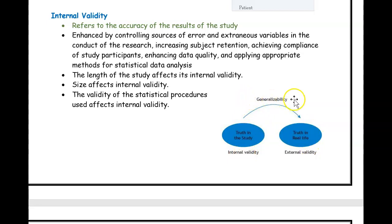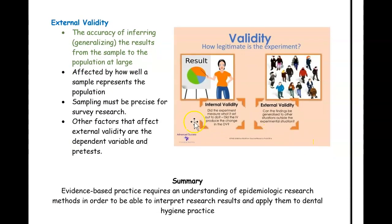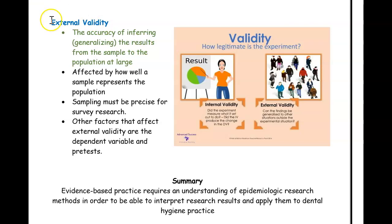External validity is about generalization — whether the findings from a study can be transferred over to real life. For example, using that same study on smoking and periodontal disease: everyone in the study who smoked had periodontal disease, but is that true of everyone else in the real world? Would all those other smokers also get periodontal disease? If the results can be generalized — transferred to everyone else in the population at large — then we can say the study has good external validity.